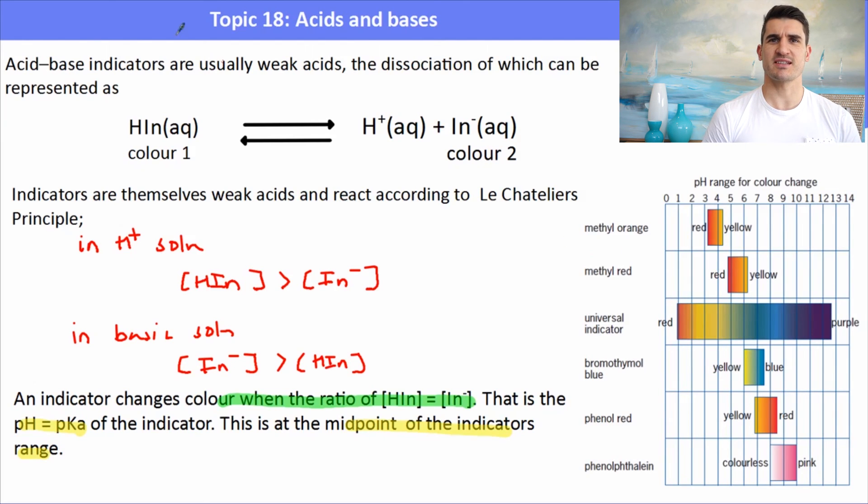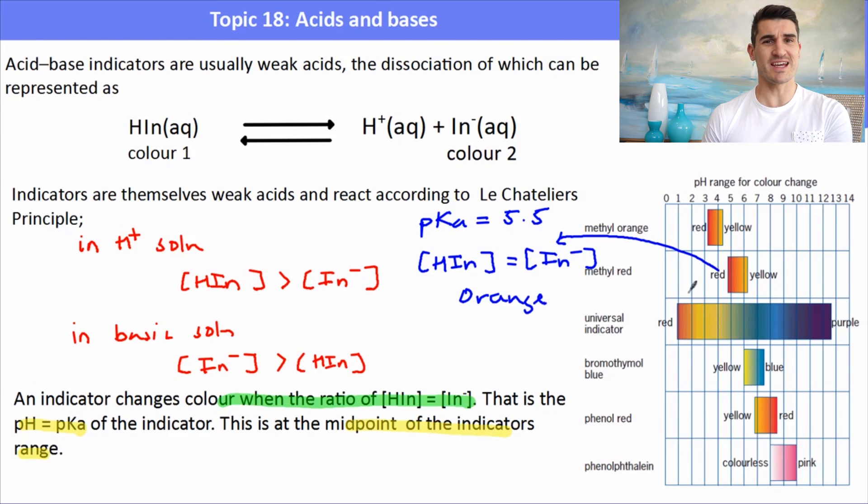For example, if we take something like methyl red, methyl red is red in an acidic solution and yellow in a basic solution, and its pKa equals 5.5. So we say that its color change occurs at about 5.5. At a pKa of 5.5, the color of HIn is equal to the color of In minus, and we would see an orange solution. As soon as we go above 5.5, we'll have more yellow in the solution, so it's going to start to appear lighter. If we were adding more acid, it would start to appear more red.